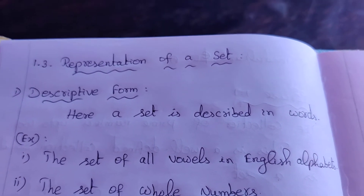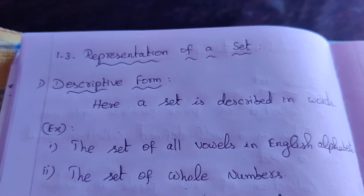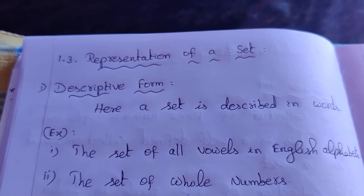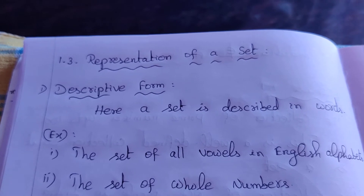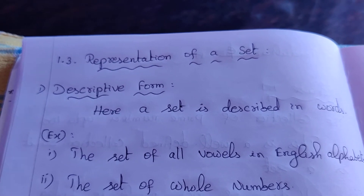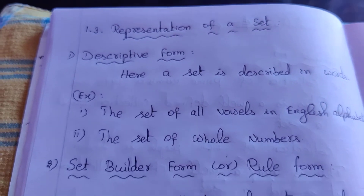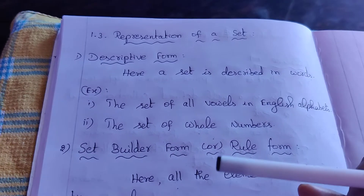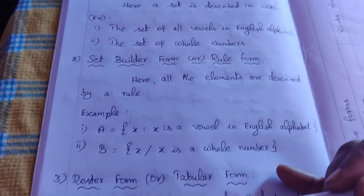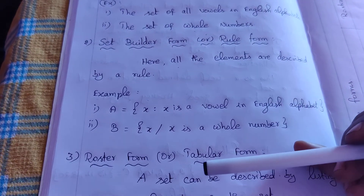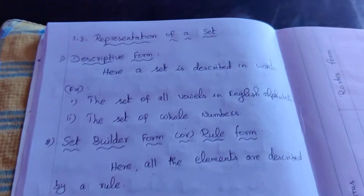How do we represent a set? There are 3 types: 1. Descriptive form, 2. Set Builder form, 3. Roster form.